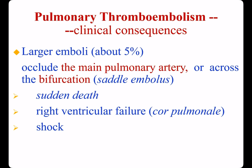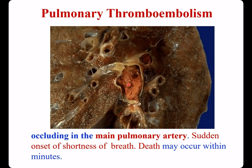Larger emboli, about 5%, occlude the main pulmonary artery or straddle the bifurcation — we call this a saddle embolus — leading to sudden death, right ventricular failure, and shock. This thrombus occluding the main pulmonary artery may cause sudden shortness of breath, and death may occur within minutes.